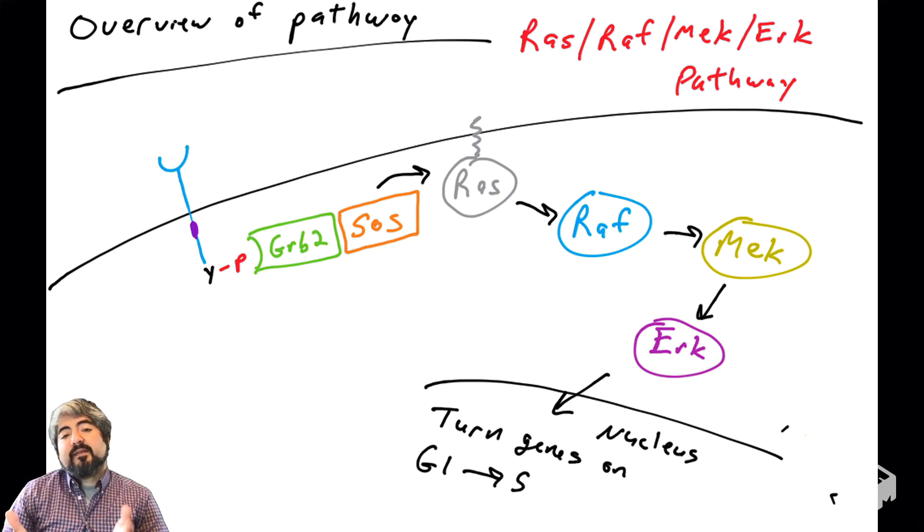We're going to continue to talk about the RAS-RAF-MEK-ERK pathway, which is very commonly dysregulated in human cancers and a target for drugs used to treat cancers. We've covered RAS, and now we're going to move on to the next protein in the pathway, RAF.